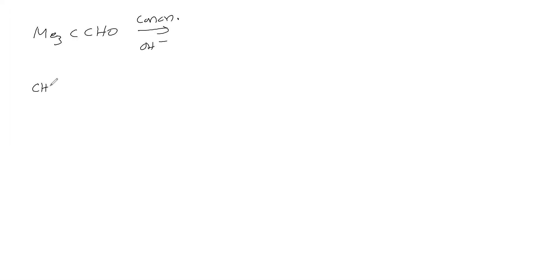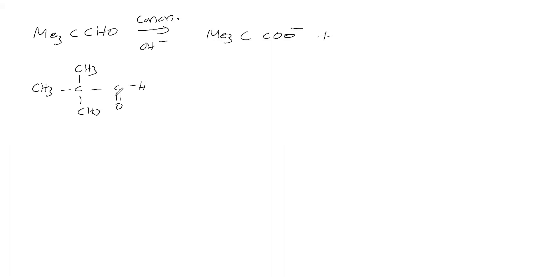Next substance: Me₃C–CHO (trimethylacetaldehyde) with concentrated alkali. This is written as (CH₃)₃C–CHO. The carbon directly attached to the carbonyl is alpha carbon, but it has no hydrogen — no alpha hydrogen. Therefore it goes for Cannizzaro reaction. One aldehyde undergoes oxidation: CHO → COO⁻ (carboxylate anion). Another aldehyde undergoes reduction: CHO → CH₂OH (primary alcohol). This is a disproportionation reaction.